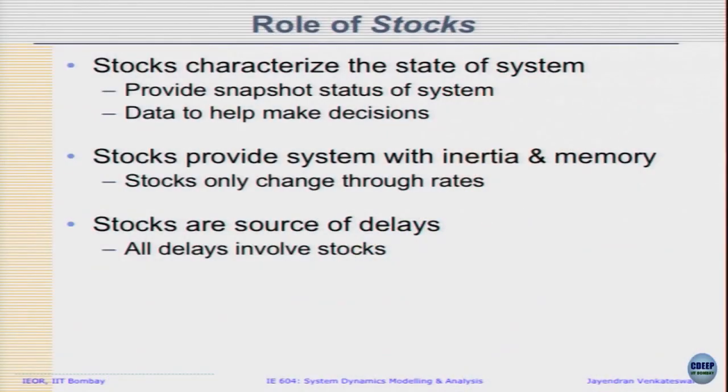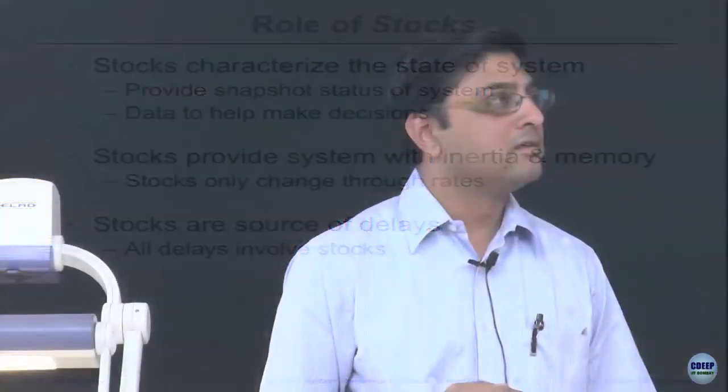Stocks are a source of delays. All delays involve stocks. For example, if you send a package through FedEx or any courier, it does not reach instantaneously — you send it and after a time lag it reaches. Until then the package does not disappear; it is there in the system somewhere. You can say 'packages in pipeline' is a stock. Whenever there is a delay, that means the information, order, or material has to be somewhere in the system.